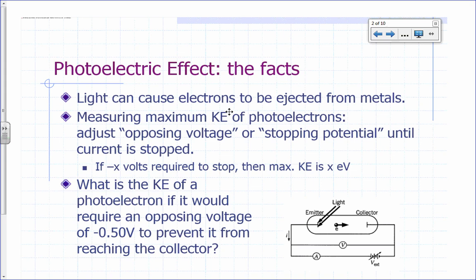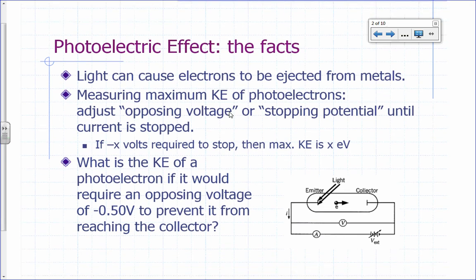So the photoelectric effect — here are the facts. If you shine light on a piece of metal, you can cause electrons to eject from the metal. The electrons that are ejected would be called photoelectrons. Here you have light hitting a metal called the emitter, because that's where the electrons come off. You can collect the electrons on the other side on another piece of metal, a collector. Electrons travel there, and the way you know electrons are being ejected is that there's going to be a current.